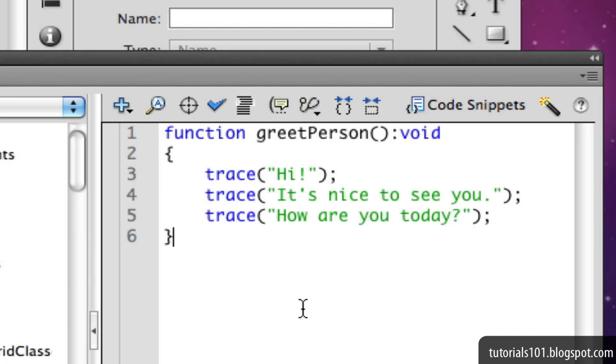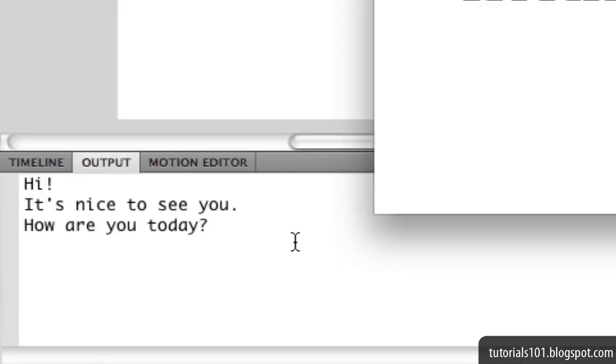So to make sure that the code runs, let's go ahead and add a function call. So now, when I test the movie, you'll see the messages displayed in the output window.